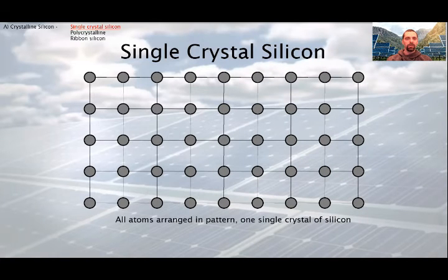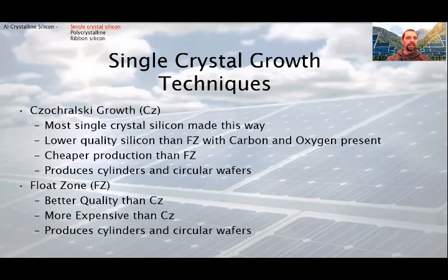As I mentioned before, monocrystalline is made from pure silicon, from a single large crystal. Its structure can be seen here. As it is a single continuous crystal structure, they have very few impurities in the cell. But how can you produce a big single crystal? On this slide can be seen the different single crystal growth techniques. The first is the Czochralski growth method. Most single crystal silicon is made this way. It produces lower quality silicon than float zone method. It is an advantage that it is cheaper production than the float zone and it produces cylinders and circular wafers. The other method is the float zone method. It has better quality than CZ, but it is more expensive than CZ. It produces also cylinders and circular wafers.